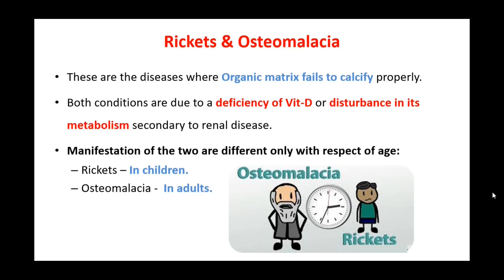Rickets and osteomalacia are diseases where the organic matrix, mainly the collagen, fails to properly calcify, resulting in large osteoid seams that remain. Both conditions are due to deficiency of vitamin D, or whenever there is a disturbance in the metabolism of vitamin D, which might be secondary to any renal disease.